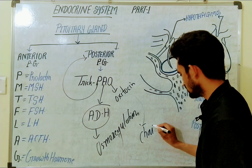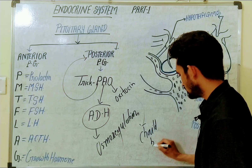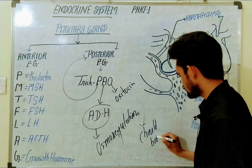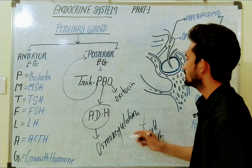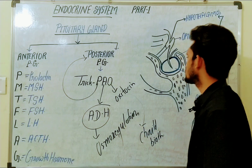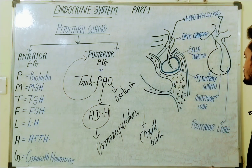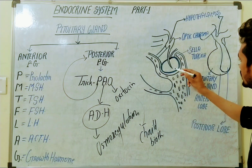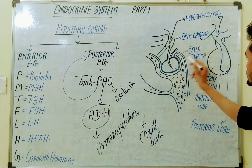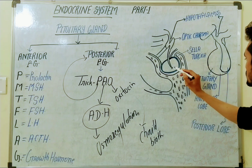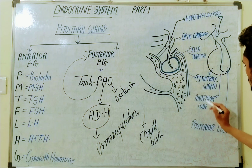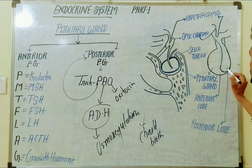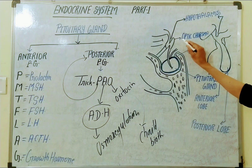Oxytocin is responsible for childbirth events. Looking at the structure, this is the pituitary gland, and this is the posterior lobe of the pituitary gland.